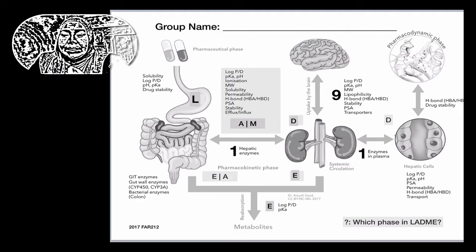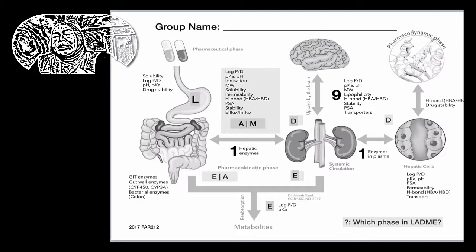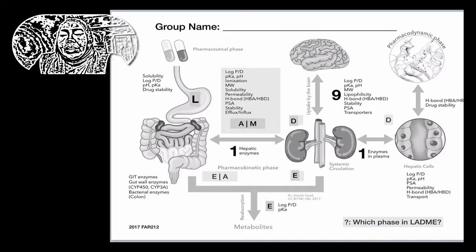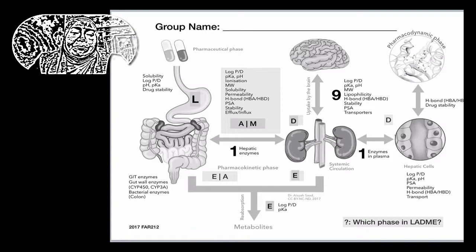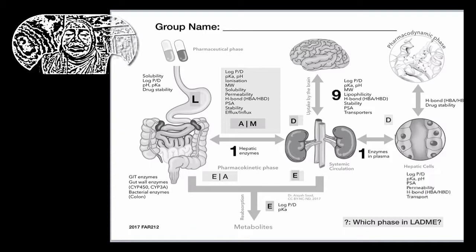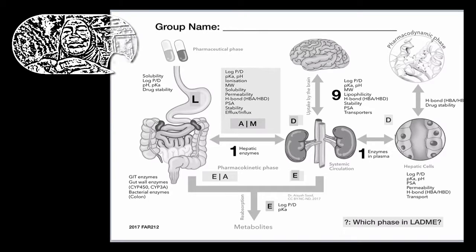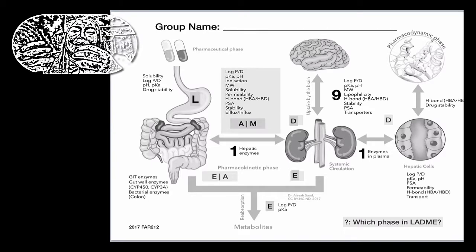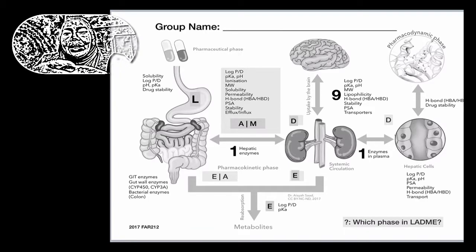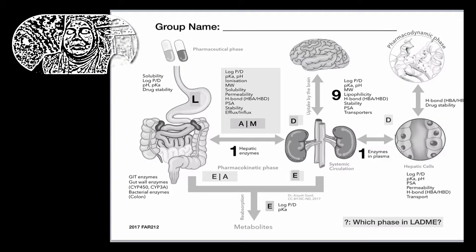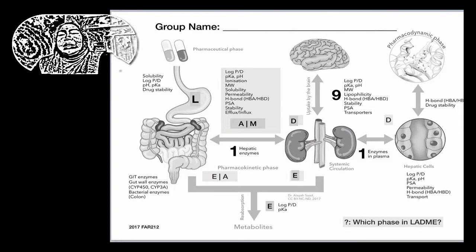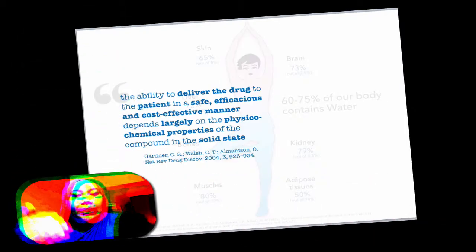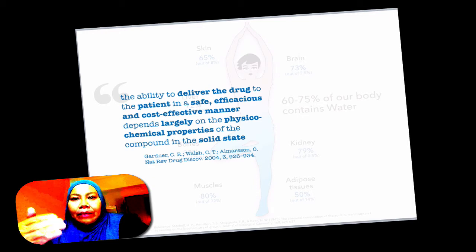Last but not least would be the factors involved in the hepatic cells. Log P, log D, pKa, pH, and PSA are all quite important factors. As you can see, there are actually more than four factors here. All the factors I asked you to consider — I used the words 'at least' — so that gives you an idea that these factors should be considered in the different organs or different phases. Let's come back to the slide I talked about earlier.